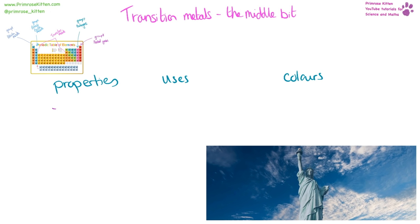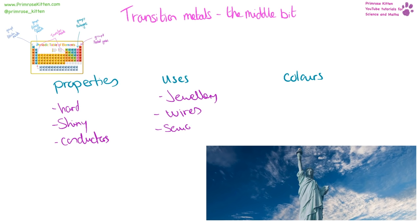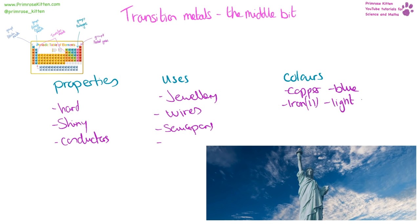Transition metals are in the middle of the periodic table. Their properties are that they are hard, shiny, and are good conductors — they are basically your traditional metals, so any property of a traditional metal you can generally associate with a transition metal. Because of their properties they can be used in jewellery, in wires, or in saucepans. Because they produce different colours, they can be used in stained glass or for coating statues — for example, the Statue of Liberty has a copper coating. Copper transition metal compounds are generally blue or bluey-green. Iron 2 compounds are light green, and Iron 3 is an orangey-brown rust colour.